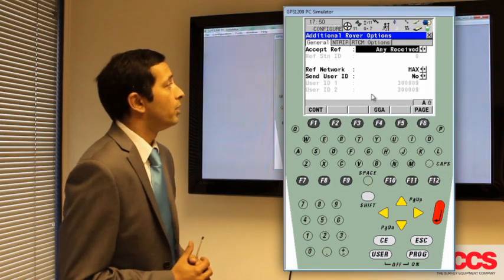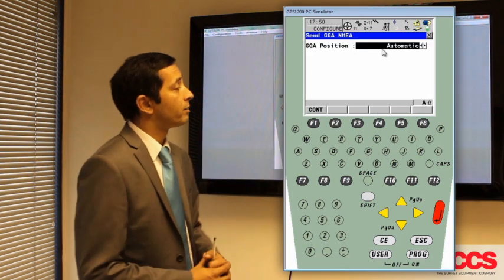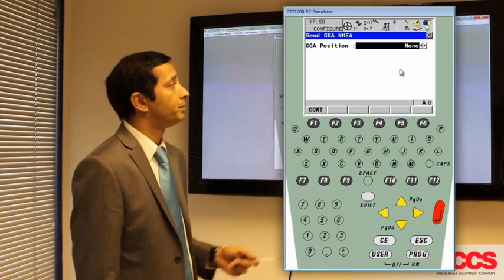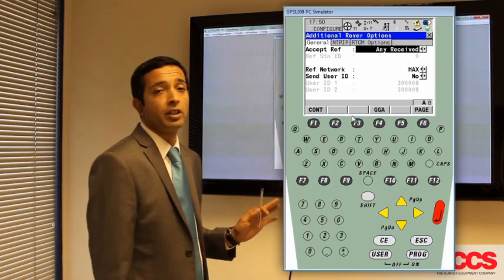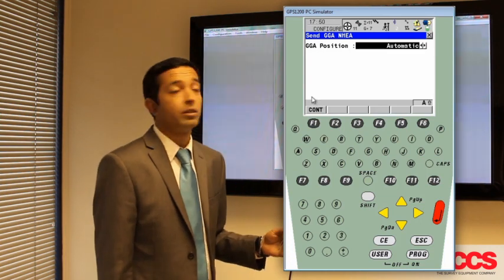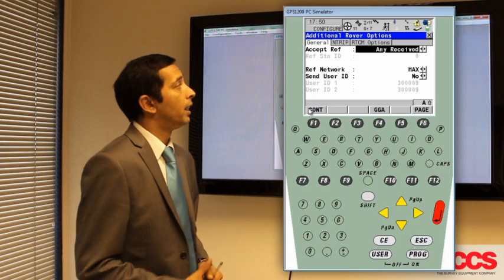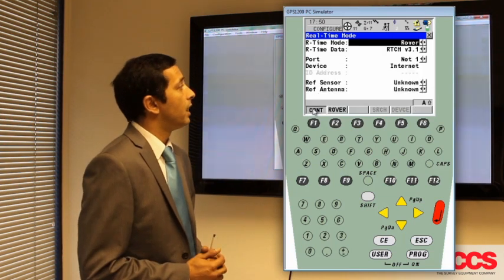Tab back to general tab and what we're going to do now is refresh the GGA by pressing F4, deselecting automatic, continuing it out of the screen, and then going back in and resetting it to automatic. Once you've done that, you can press continue and continue again back to the interfaces page.